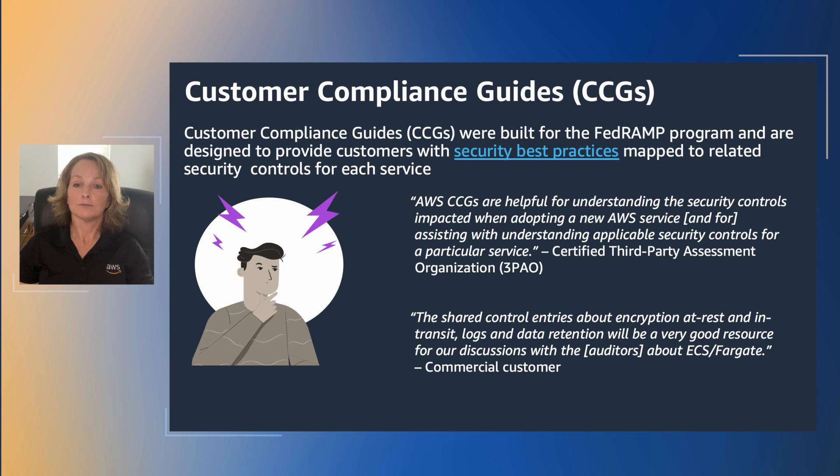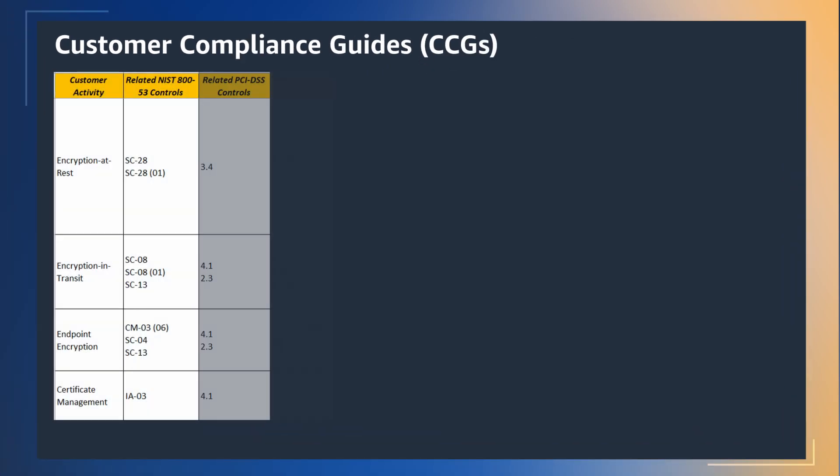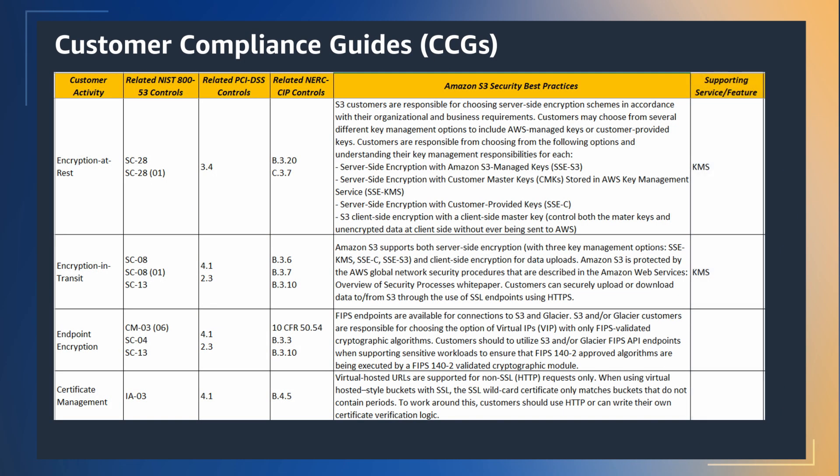These teams map the guides to related NIST controls. Here's an example of what a CCG looks like. Working backwards from the configurable options available to customers, this excerpt from the customer compliance guide shows how we've summarized best practices from our S3 user guide and mapped the options customers can choose from for the type of encryption and KMS key management. We then map this guidance to the related controls for each audit framework surrounding encryption of data at rest. There are over 50 different customer activity topics that we choose from to determine if they apply to a service.